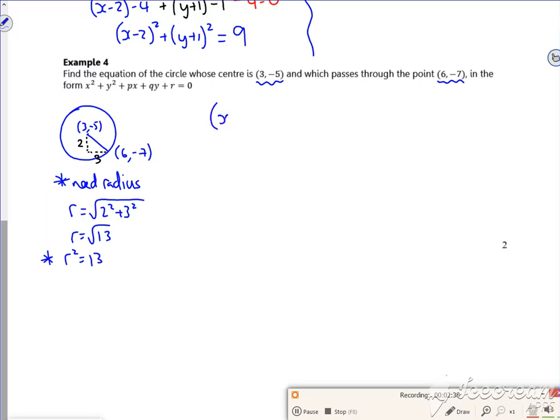So my x minus a squared plus y minus b squared is r squared, will become x minus 3 squared, y minus and minus 5, so plus 5 squared, is r squared which is 13.